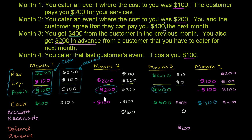On the cash basis of accounting in month two, it looks like you just lost $200. To an outsider who didn't know the details of what's actually going on in the business, they'd think something shady is going on, or it's a money-losing business. Why would I want to invest in this? They're losing $200 a month just looking at this month alone.